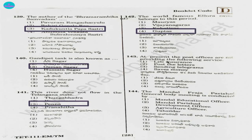Question 143. At present, the post offices are not providing the following services: life insurance — it is provided; post the letters — that is provided; sending telegrams — at present it is not provided; saving money — yes, that is also provided. So option 3, sending telegrams.